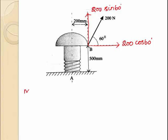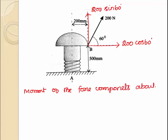Now we want to calculate the moment of the force components about point A. For analytical purposes, force components causing moment about a point in the clockwise direction are considered with a negative sign, and force components creating moment in the anti-clockwise direction are considered with a positive sign. There are two force components acting at point B.